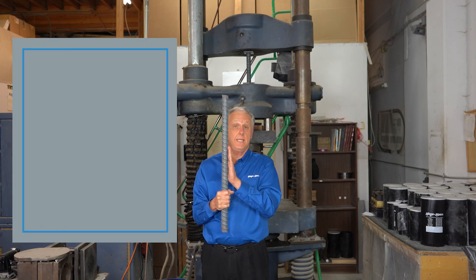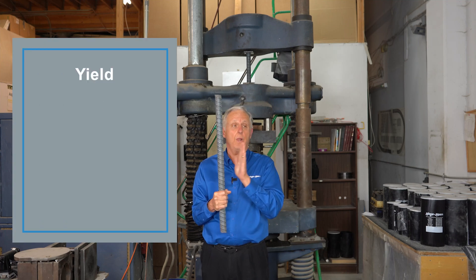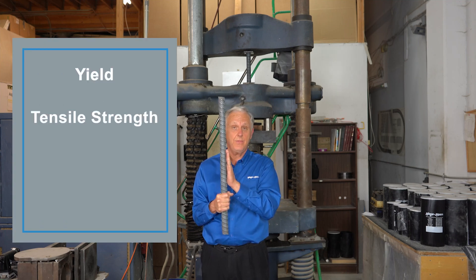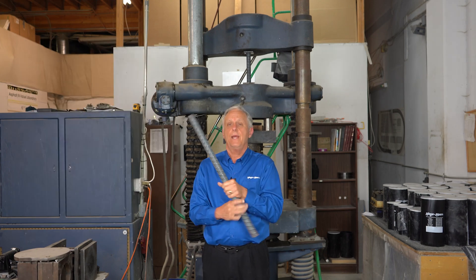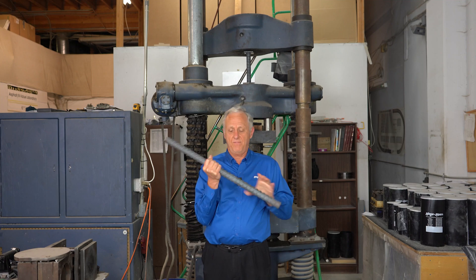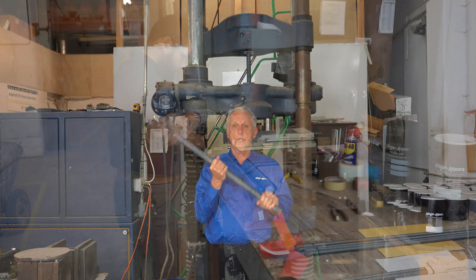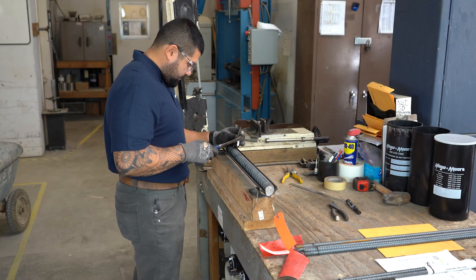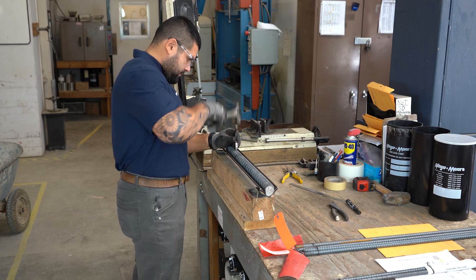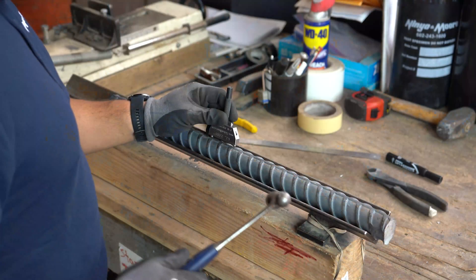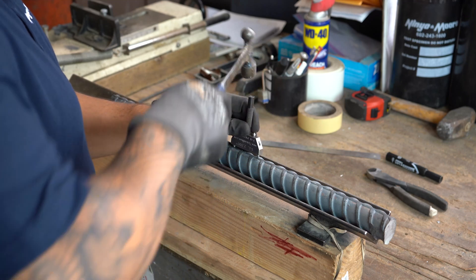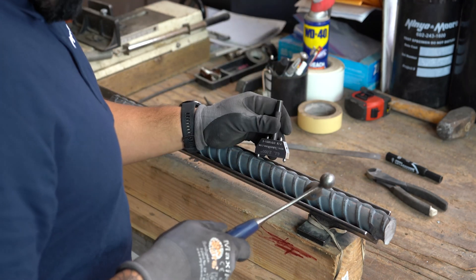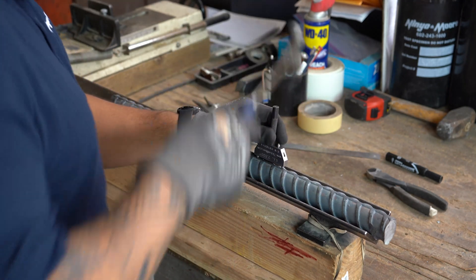To test this, we're going to perform a tensile test. The purpose is that there are properties of this steel that have to be met for it to act as intended by the design engineer. One of those properties is the yield, one is the tensile strength, and one is the elongation. Before we do this test, we're going to put marks into this bar so we can measure the elongation after it's broken.